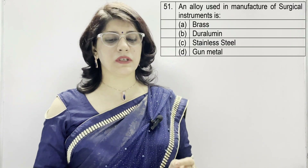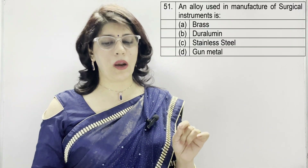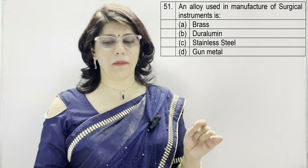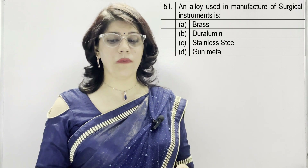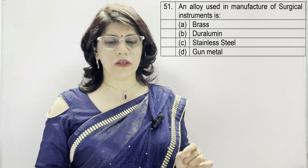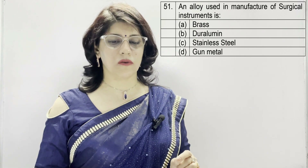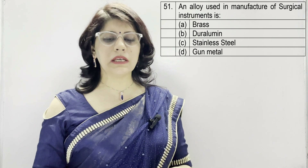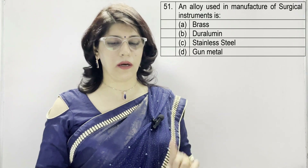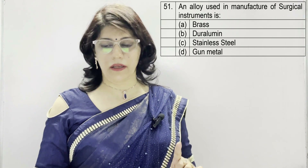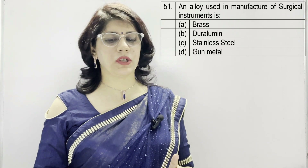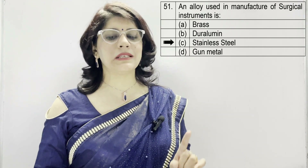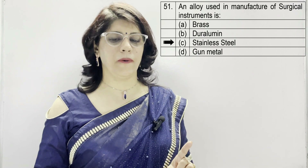In question number 51: an alloy used in the manufacture of surgical instruments is — A: brass, B: duralumin, C: stainless steel, D: gun metal. The correct option is C — stainless steel.